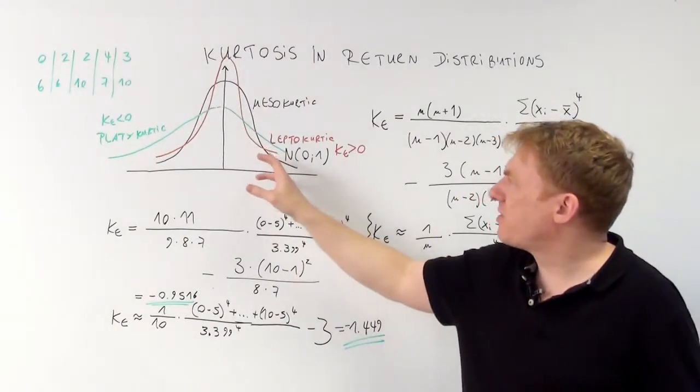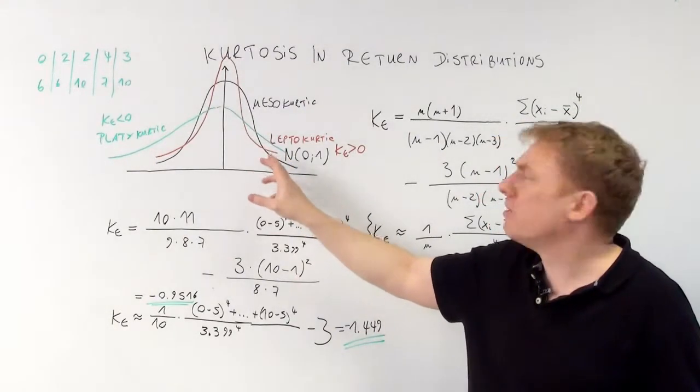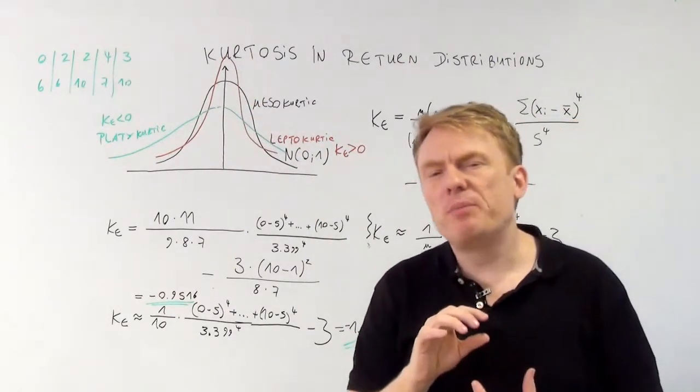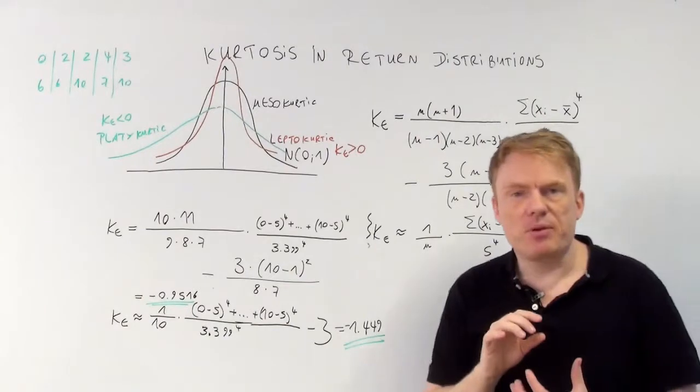A curve that is more peaked than the black one, for example the red curve, is called leptocurtic.